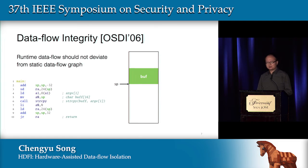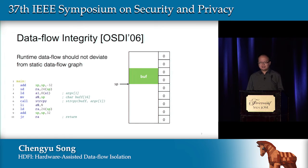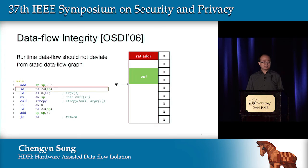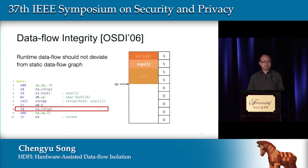HDFI is inspired by the data flow integrity work published in OSDI 2006. Similar to control flow integrity, data flow integrity enforces that the runtime data flow should not deviate from the model generated by static analysis. To enforce this, DFI first assigns every write instruction an ID, then extends the memory model to record the ID of the last writer. For example, when we push the return address onto the stack, we modify the corresponding tag to record that the last writer is line three. If a buffer overflow happens, we record that the last writer is actually line six. At every load instruction, we check whether the last writer is within the allowed set — in this example, the only allowed writer for the return address is line three. If an overflow happens, we detect it, an exception is generated, and the attack is prevented.